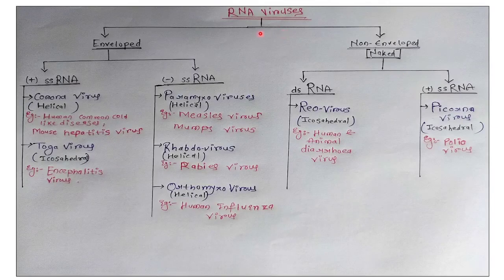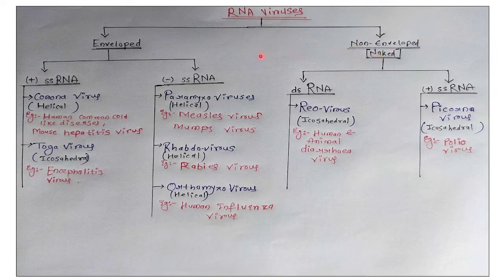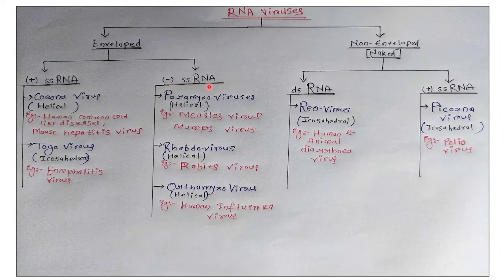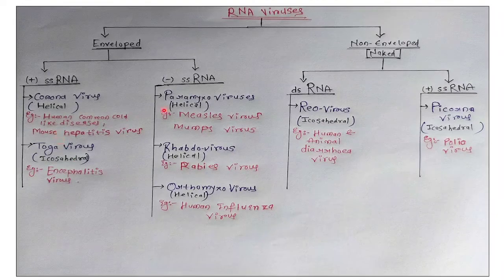Let's see the classification of RNA viruses. RNA viruses can also be enveloped or non-enveloped. For enveloped RNA viruses: coronavirus and togavirus are plus single-stranded RNA viruses, while paramyxoviruses, rhabdoviruses, and orthomyxoviruses are minus single-stranded RNA viruses. Coronavirus has helical geometry, whereas togavirus has icosahedral geometry. Paramyxoviruses, rhabdoviruses, and orthomyxoviruses all have helical geometry.